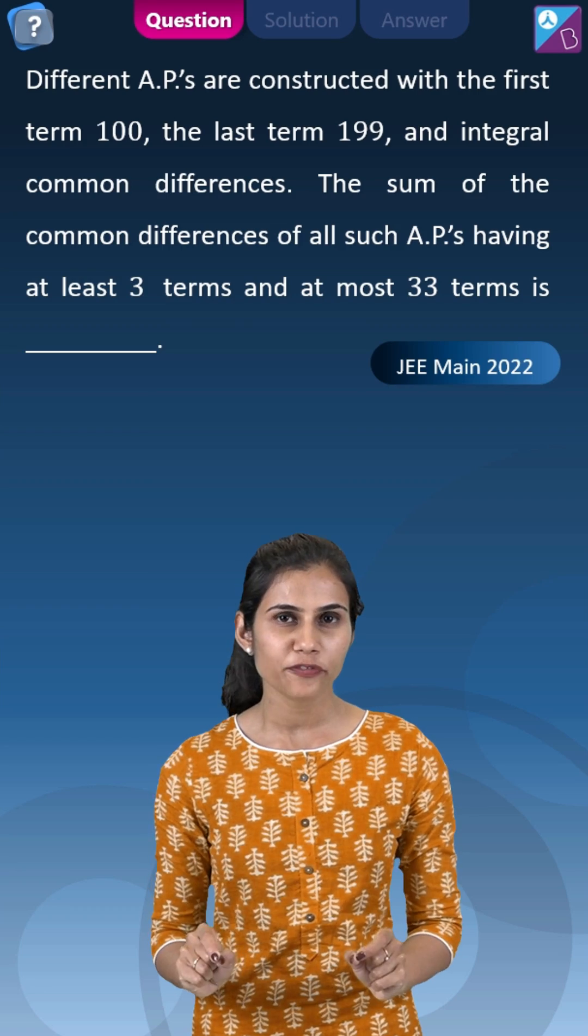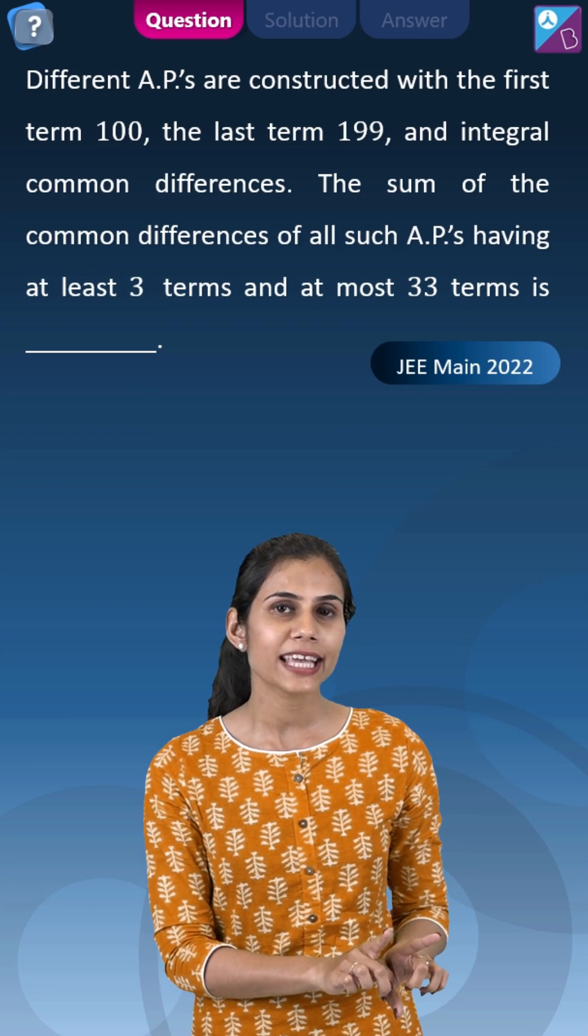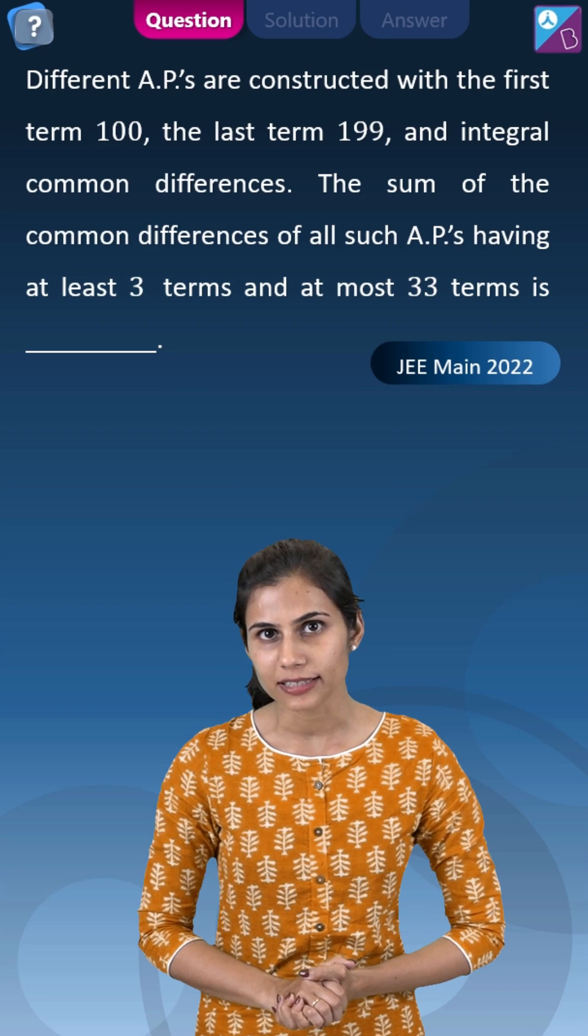I need the sum of common differences of all these APs provided minimum number of terms they have is 3 and the maximum is 33.